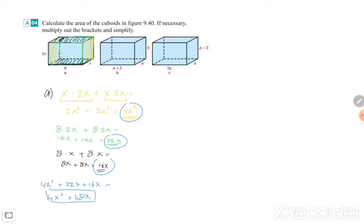That's the first one, exercise A. Exercise B, we're going to do exactly the same. A times 6, and I'm going to write down A times 6 plus again A times 6. So 6A plus 6A is together 12A.